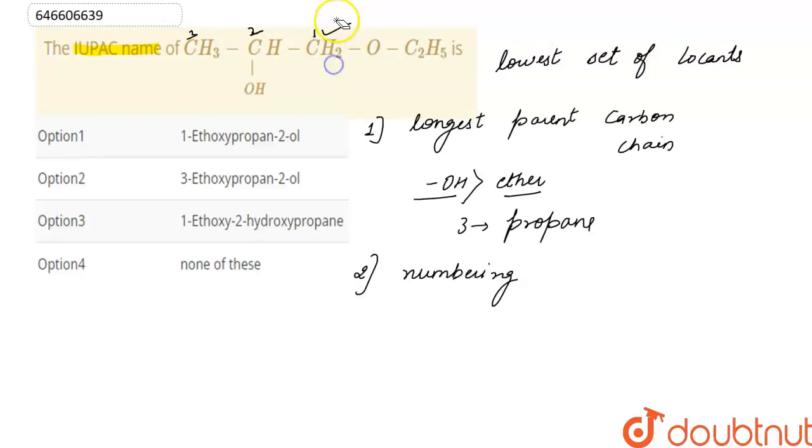That is ethoxy. So the name of this compound is: as on first carbon, substituent group is ether, and to this an ethyl group is attached on the other side of oxygen.